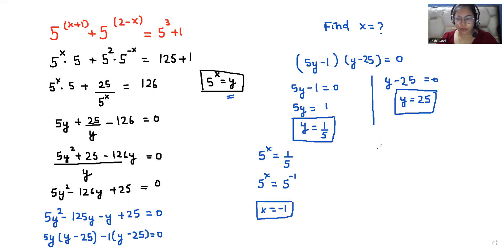And from the second case, 5^x equals 25, so 5^x equals 5^2, so the value of x is 2. So now we have two values of x.